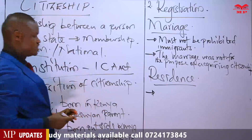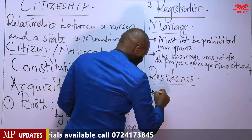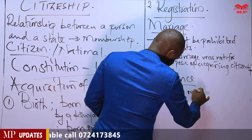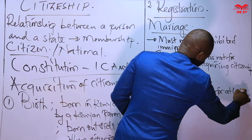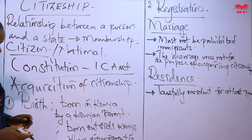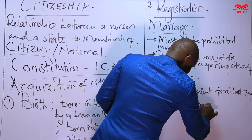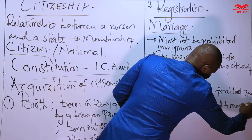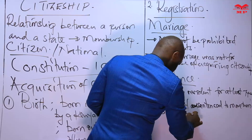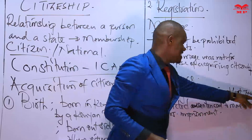Citizenship by registration is also available to persons who are lawfully resident in Kenya. There is a requirement that they should have been lawfully resident in Kenya for at least seven years preceding the application. They are also required not to have been convicted and sentenced to more than three years imprisonment during their seven-year stay within Kenya.